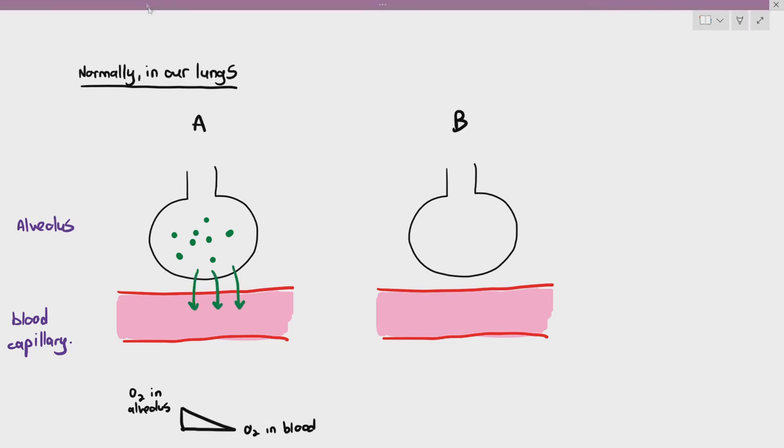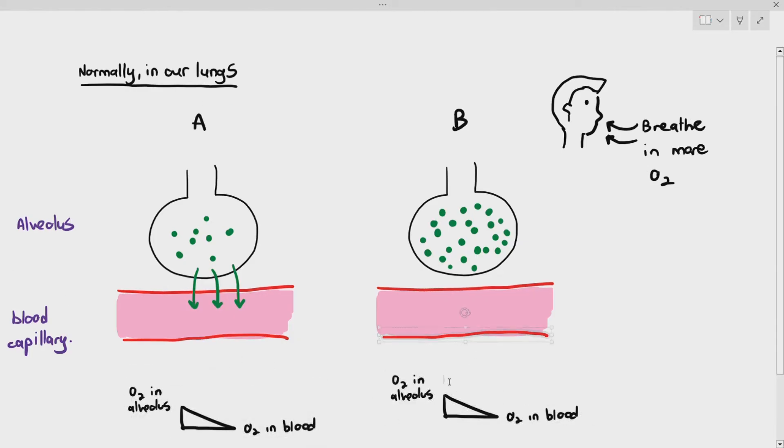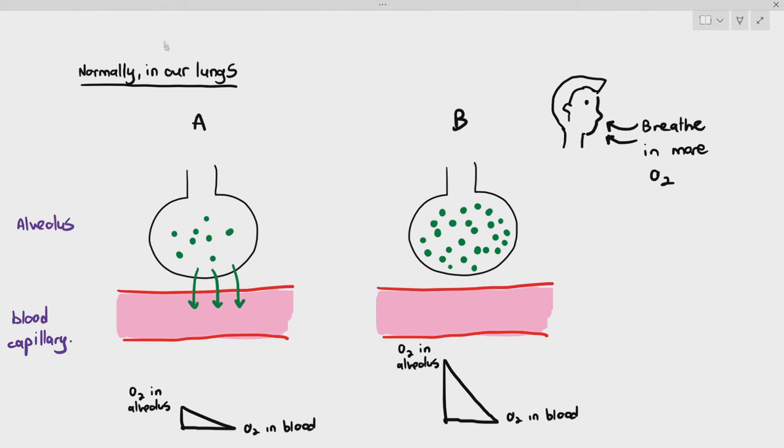But if I want more oxygen to diffuse into the capillary at a higher diffusion rate, what I need to do is, I need to breathe in more air. And when I breathe in more air, what will happen here is, there will be a higher concentration of oxygen in the alveoli. Thus, when you compare the concentration gradient in B, what will actually happen is, it has a steeper concentration gradient compared to A. Therefore, there will be a higher diffusion rate of oxygen into the blood.